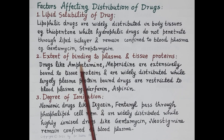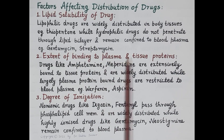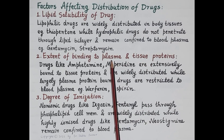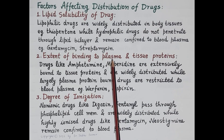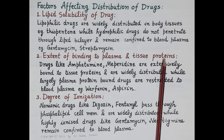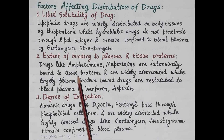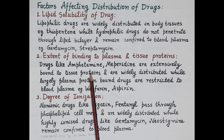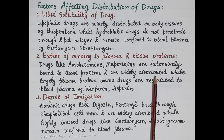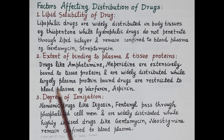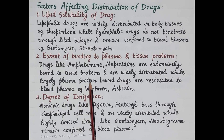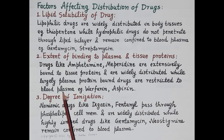The second important factor is binding of drug to plasma proteins and tissue proteins. Plasma proteins are present in the plasma, while tissue proteins are present in the extravascular tissues. Drugs like amphetamine and meperidine are extensively bound to tissue proteins and are thus widely distributed in extravascular tissues. While drugs like warfarin and aspirin are largely plasma protein-bound and are therefore restricted to the blood plasma.